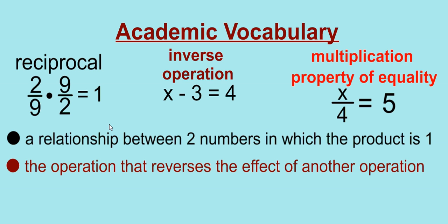An inverse operation is the operation that reverses the effect of another. So we want to isolate the variable or get it by itself. In order to do that, in this equation x minus 3, we have to do the inverse of minus 3 or subtracting 3. The inverse would be to add 3. So that will reverse the effect, and you'll be left with a 0.